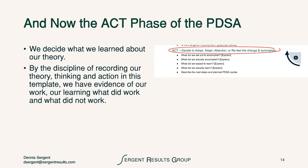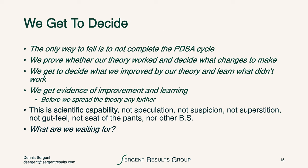The act phase comes next. This is where we decide what we learned about our theory. By the discipline of recording our theory in writing, thinking and acting in this template, we've documented what we have as evidence — evidence of our work and our learning: what did work and what did not. It's an opportunity to complete the cycle, and really the only way to fail is to not complete the PDSA cycle. It's fundamental to learning and fundamental to improvement. It breaks the status quo. We prove whether our theory worked, decide what changes to make, and learn what did not work. We now have evidence of improvement, learning, or sometimes both — and before spending time and effort to spread our theory further, we've gotten the first piece of information telling us whether our theory is correct.